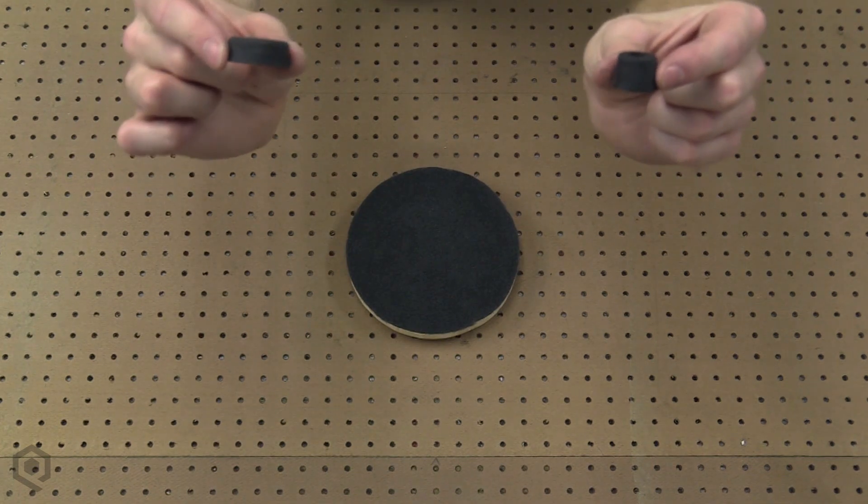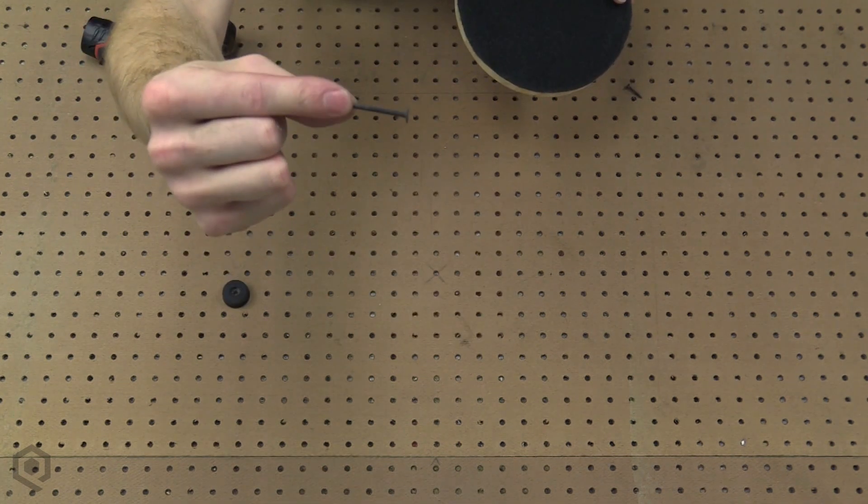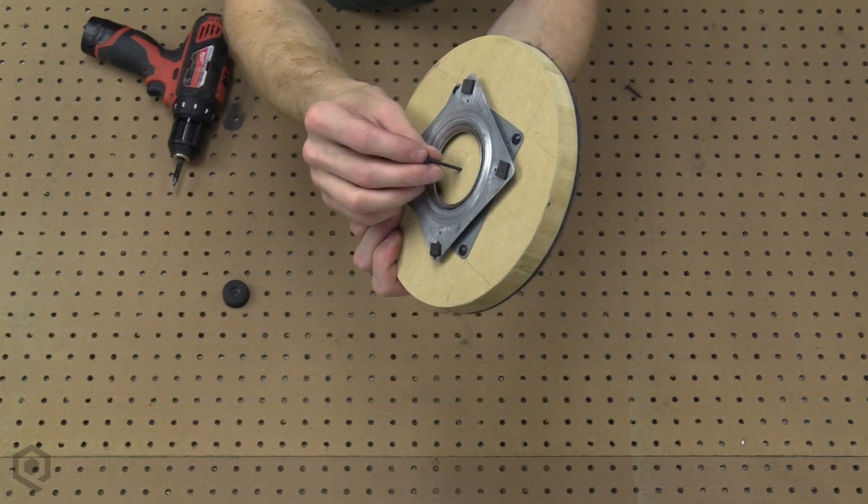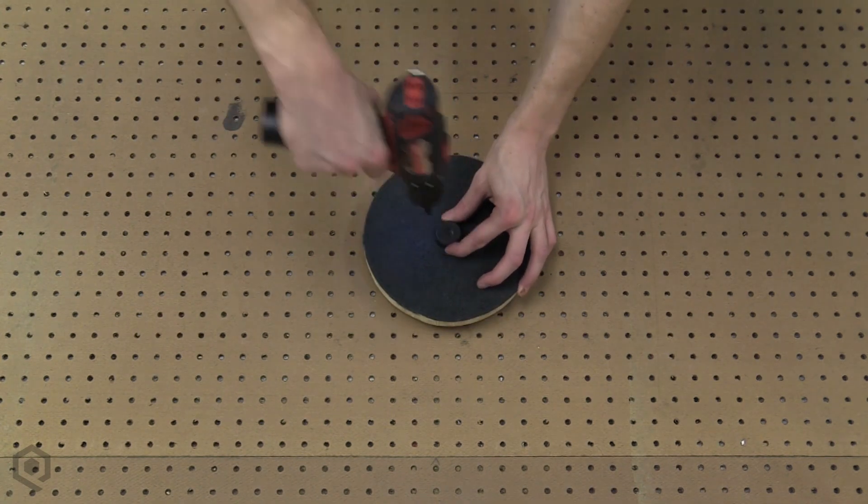Next, grab a rubber foot and the one inch screw from earlier. If you have a smaller sub, don't use a big foot or it won't fit in the motor's backside. Next, we're going to screw down the rubber foot. I couldn't feel the center hole through the carpet, so I poked the nail through. Then screw down the rubber foot. After you screw in the rubber foot, you're all done.